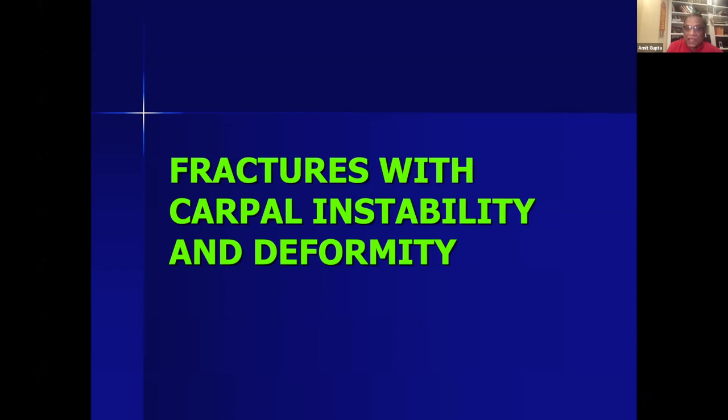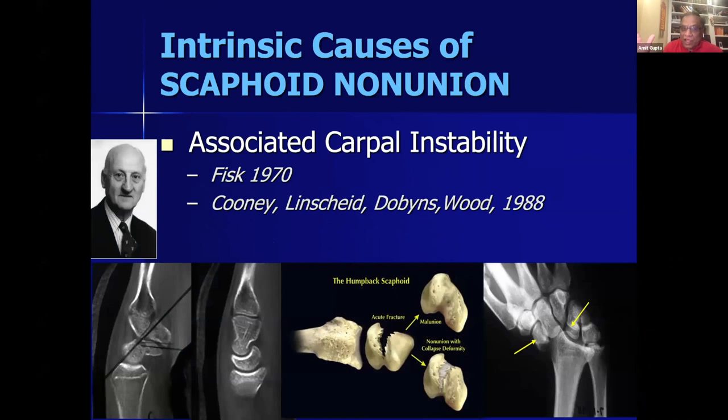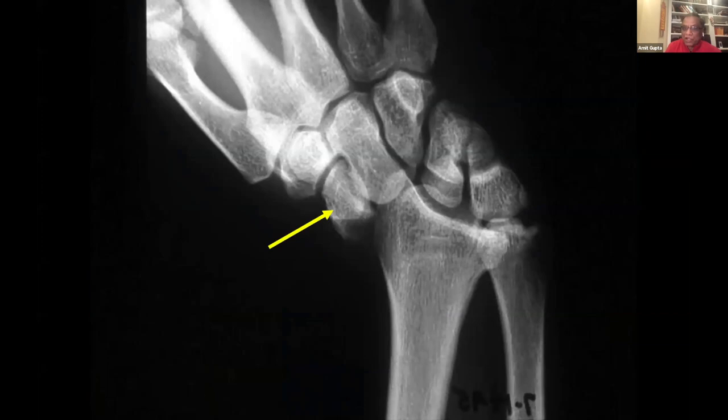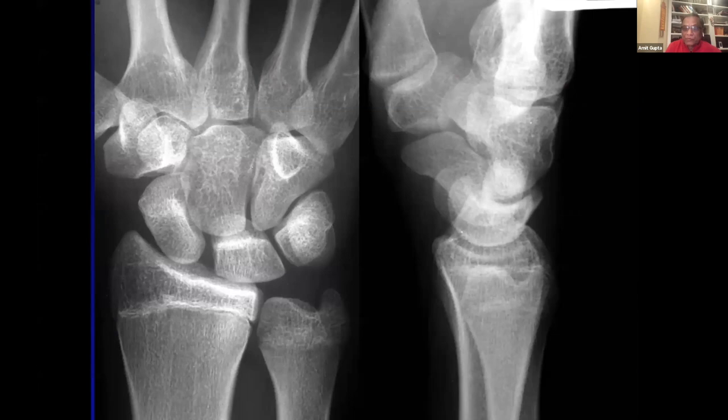Fractures with associated carpal instability must be fixed primarily because they are in two different towns. Our index patient CT scan shows a humpback deformity and a DISI deformity. The fourth characteristic is proximal pole fractures — these are bad actors. Rettig and Raskin showed they don't do well with cast fixation and must be fixed primarily. Other publications show 34% progress to non-union when treated non-operatively.